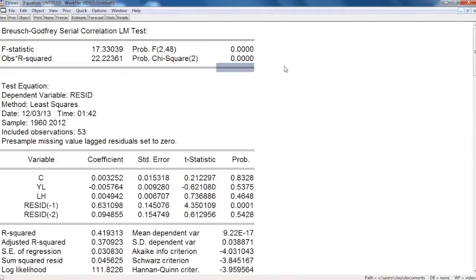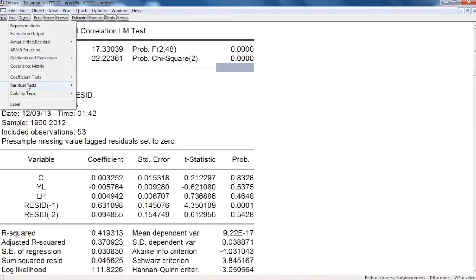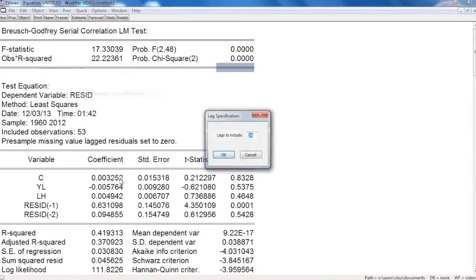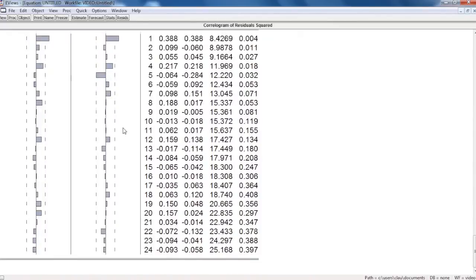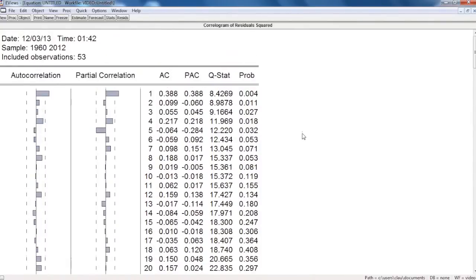And the other test is the correlogram of residuals, with 24 lags in this case. And this shows that there is correlation on the first lag. So, we do have evidence of serial correlation in this model.